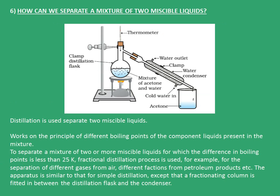The sixth one is: how can we separate a mixture of two miscible liquids? Earlier we had seen separation of two immiscible liquids; now we will see separation of two miscible liquids. In this case, distillation is the process that is used. It works on the principle of different boiling points of the component liquids present in the mixture. To separate a mixture of two or more miscible liquids for which the difference in boiling point is less than 25 Kelvin, a technique called fractional distillation is used.